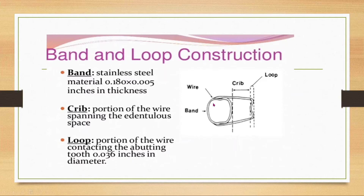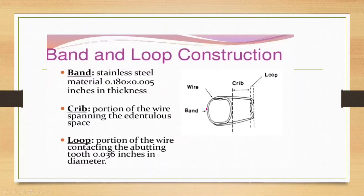The wire and band loop consists of a crib — the portion of the wire spanning into the rectangular space — and a loop portion of the wire contacting the abutment tooth. The band encircles the abutment tooth.